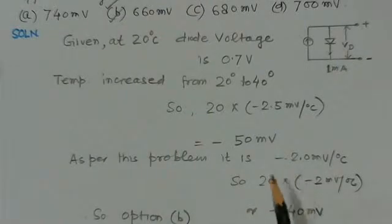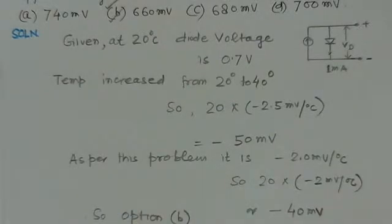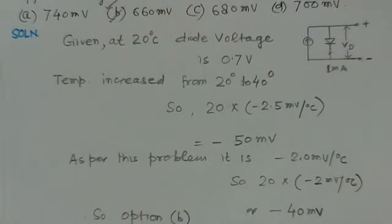Depending upon the problem, you can select either 2 or 2.5 millivolts per degree centigrade. Both values are considered correct, and since there is only a marginal difference, you can select either value based on which fits the given options.